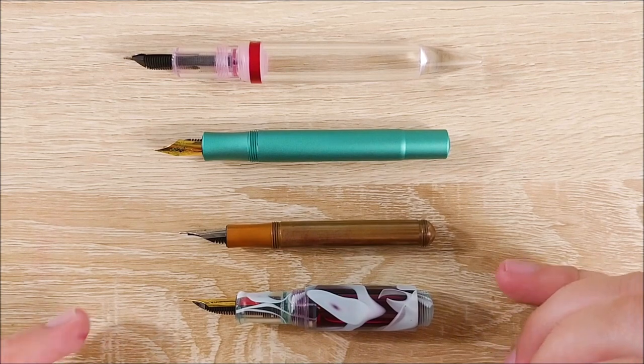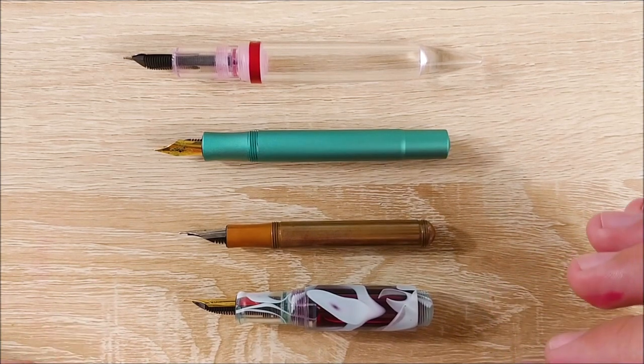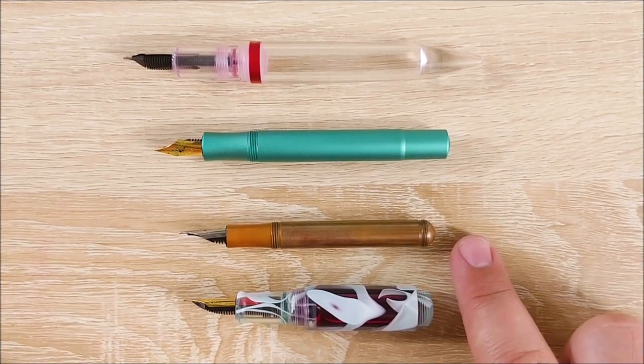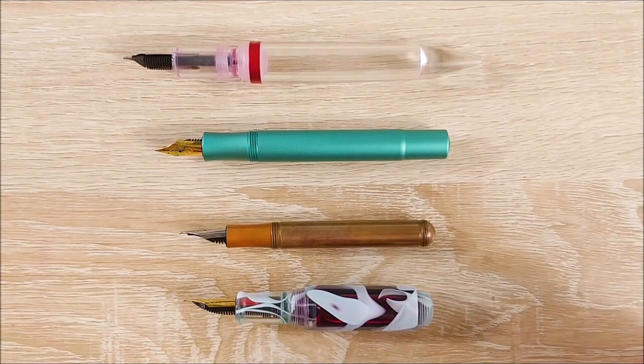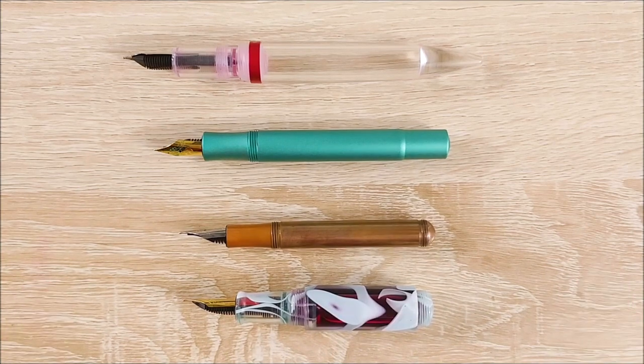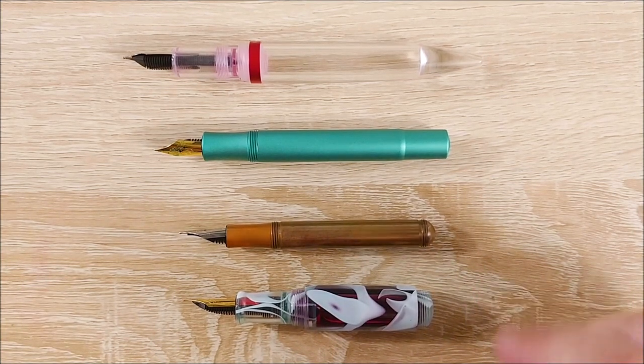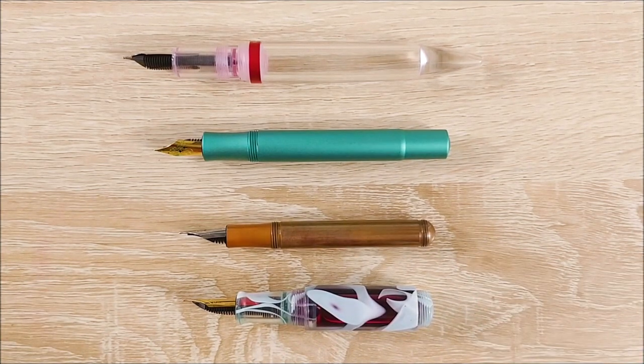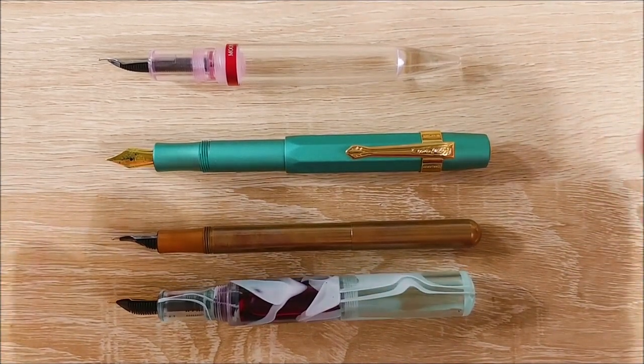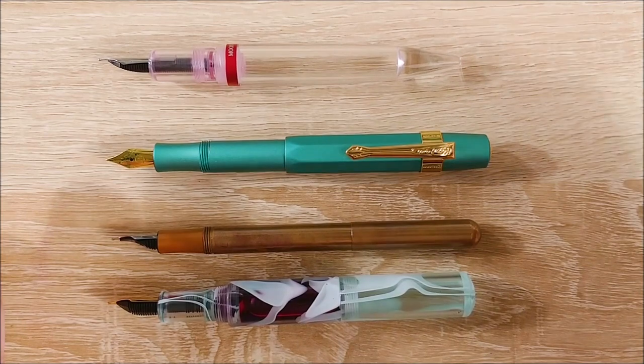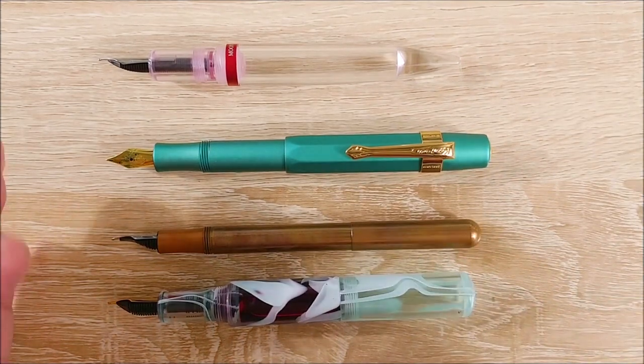And here it is uncapped. You can see it lines up very closely with the Lilliput. It's a little bit shorter than the Sport, and obviously it's going to be shorter than the M2. It's a very tiny pen.